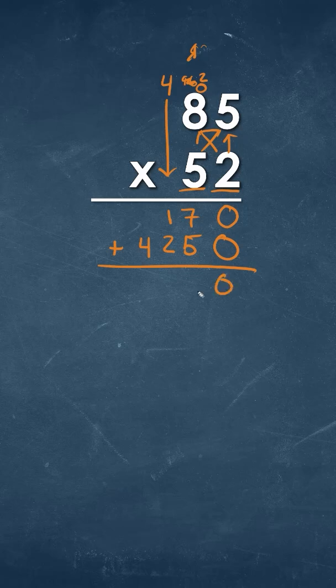So we have 0, we have a 2, and then 1 plus 2 plus 4 plus 4. So 85 times 52 is going to be 4420.